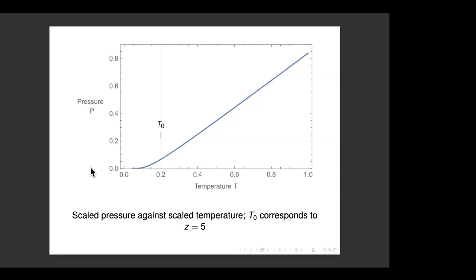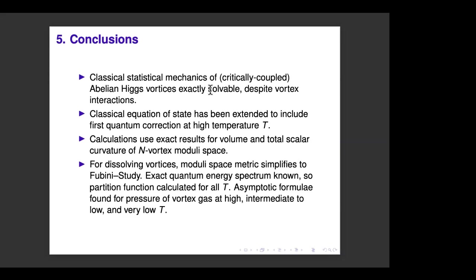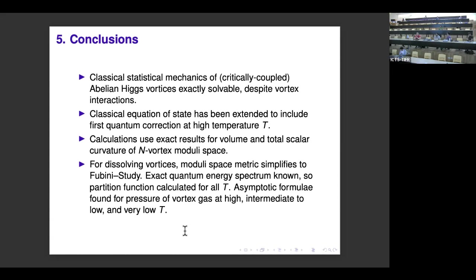To wrap up: classical statistical mechanics of vortices is exactly solvable despite vortex interactions. The classical equation of state is now extended to include the first quantum correction at high temperature for vortices on a general surface, using exact results for the volume and total scalar curvature of the N-vortex moduli space. In the dissolving vortex limit, where the moduli space metric simplifies to Fubini-Study and the exact quantum energy spectrum is known, the partition function can be calculated for all temperatures. We found asymptotic pressure formulae for high, intermediate-to-low, and very-low temperature — three asymptotic regimes.